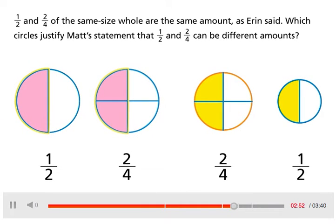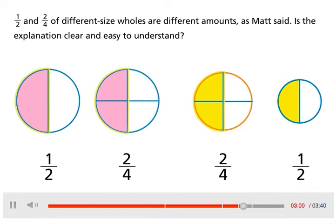Which circles justify Matt's statement that one-half and two-fourths can be different amounts? One-half and two-fourths of different size wholes are different amounts, as Matt said.